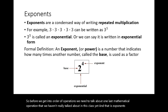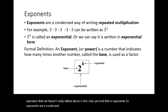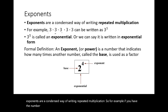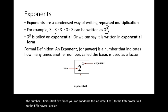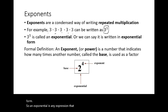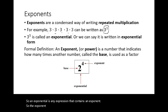Exponents are a condensed way of writing repeated multiplication. For example, if you have the number three times itself five times, you can condense this and write it as three to the fifth power. Three to the fifth power is called an exponential, or we can say it is written in exponential form. An exponential is any expression that contains an exponent.